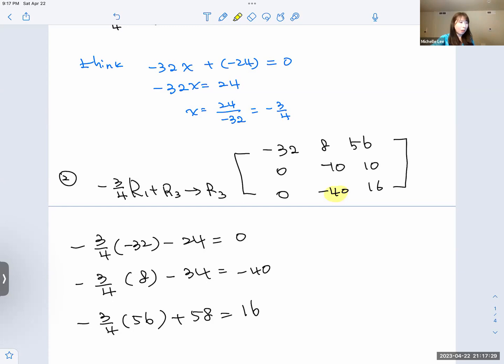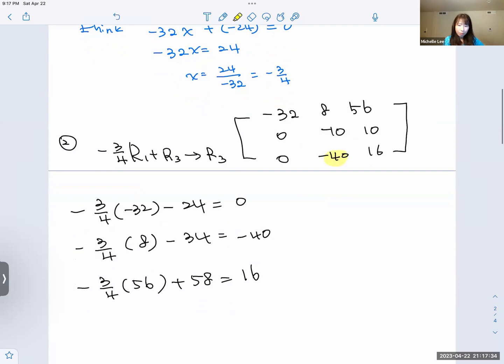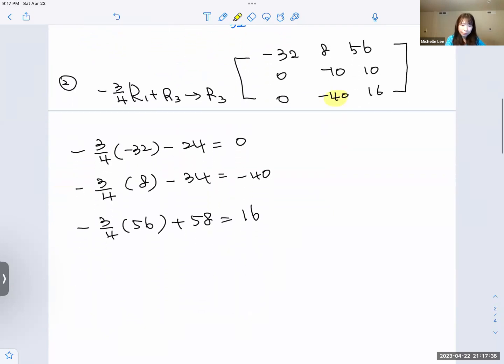So we do that. Negative 4 R2 plus R3 to make R3.